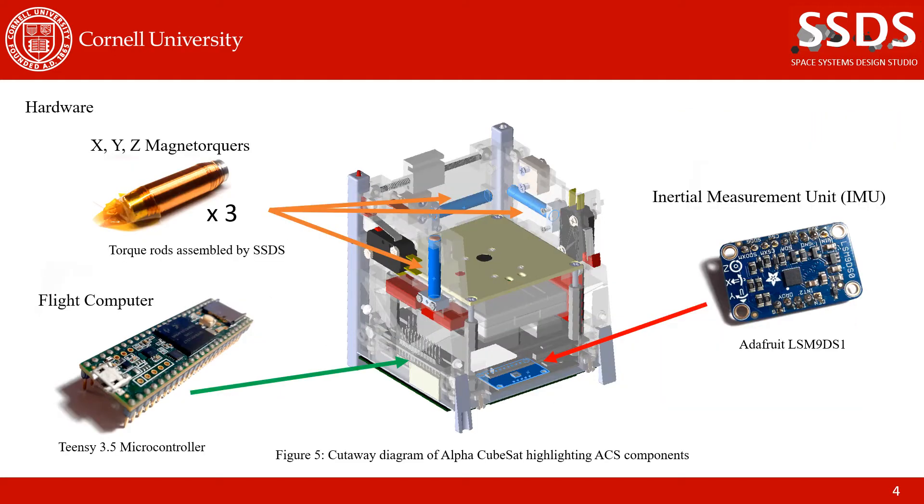And just so everyone is on the same page with the hardware used for the system, here's a cutaway view of the CubeSat. As you can see, there's the payload compartment in the top center with the batteries and circuit boards squeezed below. The components associated with the ACS include three magnetorquers positioned in the X, Y, and Z directions outside of the payload compartment, and the IMU breakout board from Adafruit, which consists of an accelerometer, gyroscope, and magnetometer. And hidden behind those headers but on the same PCB as the IMU is the TNC 3.5 microcontroller. All of these components are very low cost, the two boards are less than $40, and as I mentioned, the magnetorquers are assembled in-house.